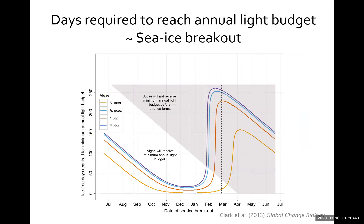We added these two things together and created a model of the number of ice-free days that the algae need to survive, based on the time of year when the ice breaks out. You can see that in the middle of summer, if ice was to break out around that time, algae are going to receive their annual light budgets within a few days because the light is so strong. Whereas if we leave it a little bit later, the number of days they need rapidly goes up, into a gray area where there are not enough days left in the year — essentially an impossible region of the graph.